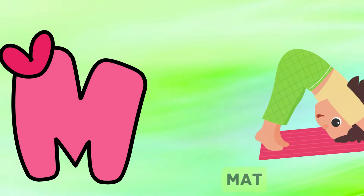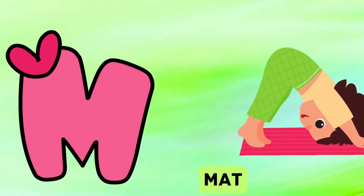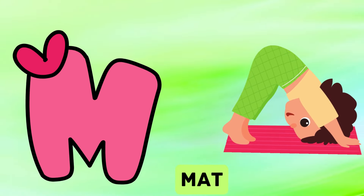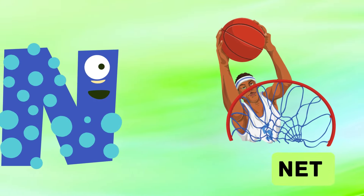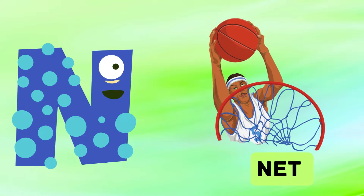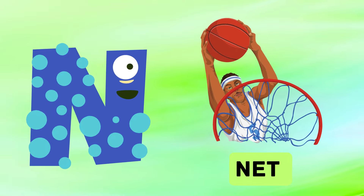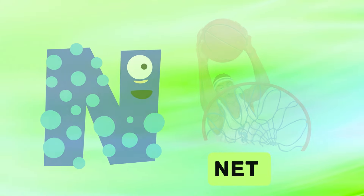M is for mat, m-m-mat. N is for net, n-n-net.